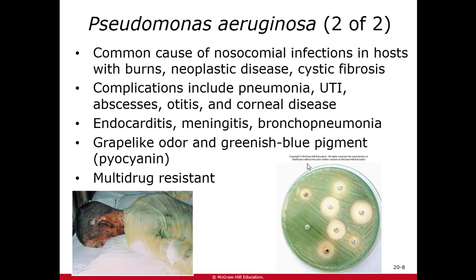The people at highest risk are those with third-degree burns, some type of neoplastic disease, or cystic fibrosis. This bacteria really loves a moist environment. With third-degree burns, when you lose that outer layer of skin, you have lots of fluid coming from the tissue beneath. In cystic fibrosis, massive amounts of mucus in the lung tissue create a perfect environment for Pseudomonas. It can also cause pneumonia, UTIs, abscesses, ear infections, corneal diseases, endocarditis, meningitis, and bronchopneumonia.